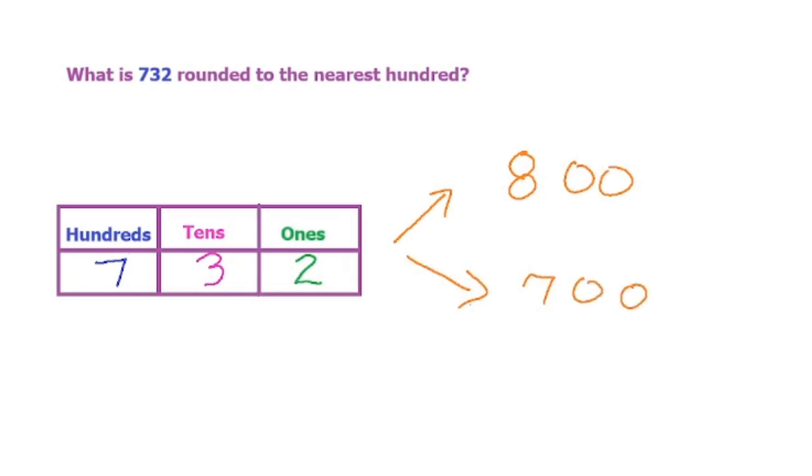We need to figure out if we're going to round 732 to 700 or 800. That's what it means to round to the nearest hundred.